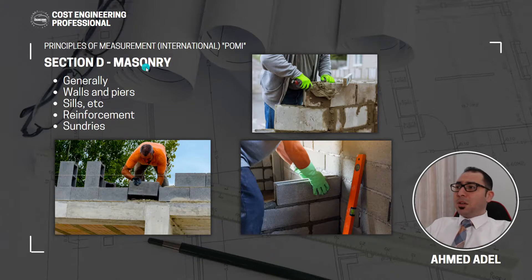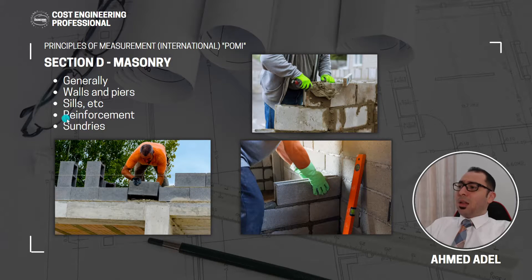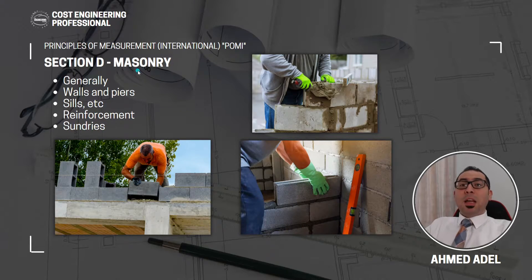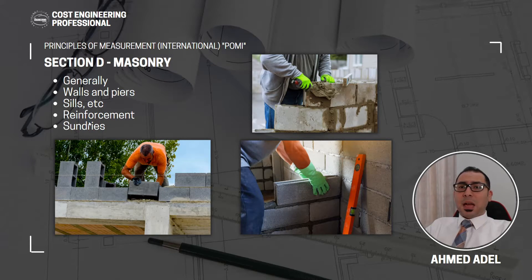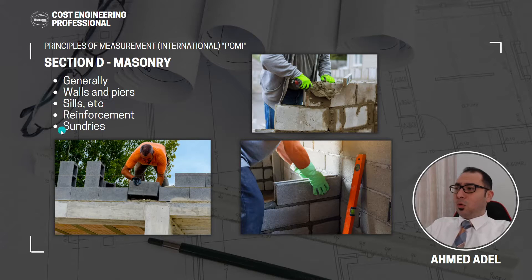Section D — Masonry Work. Here you will have walls and piers such as blockwork and brickwork, then sills and reinforcement for sills and lintels, because openings may require a lintel or sill with reinforcement. Although these may be concrete lintels, they still come under masonry works. In current practice, GI lintels (metal) are often used — as per POMI, these can be placed under masonry since they are closely associated with it.